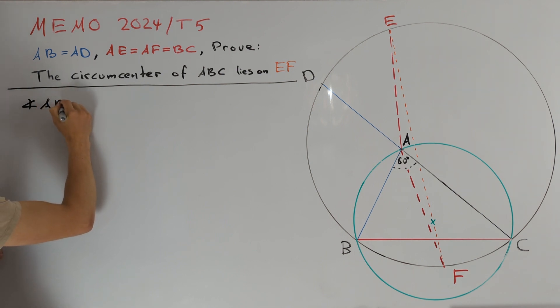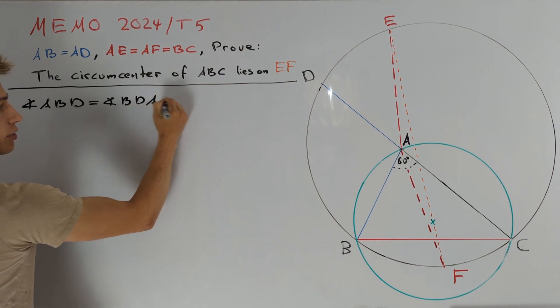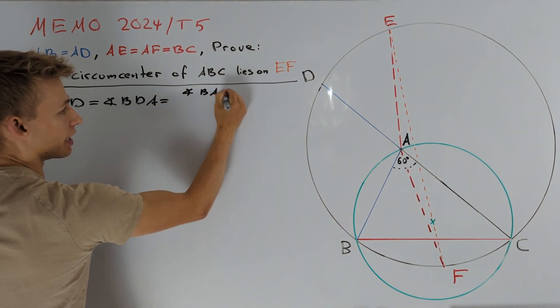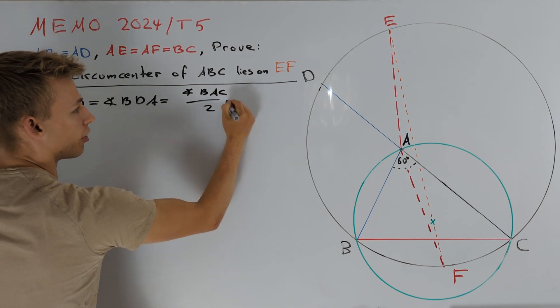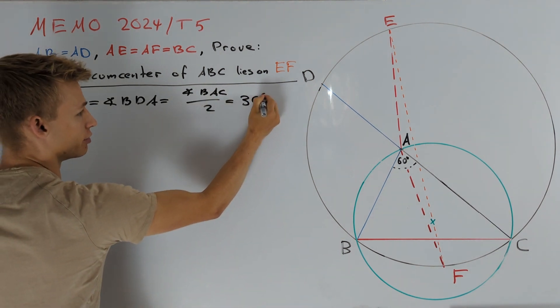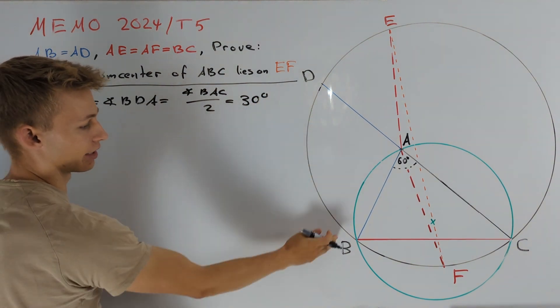Angle ABD is equal to the angle BDA which is equal to angle BAC divided by 2, or 60 degrees divided by 2, or 30 degrees. So let's draw in these two angles into the diagram.